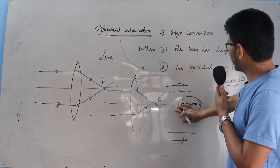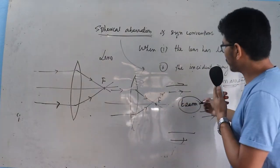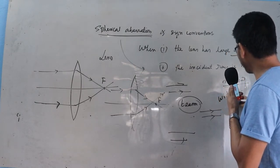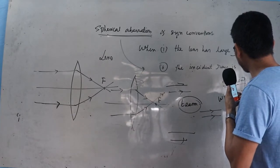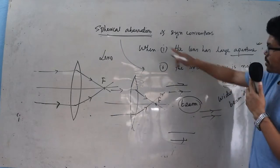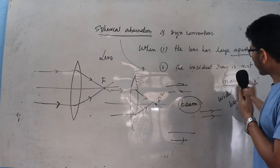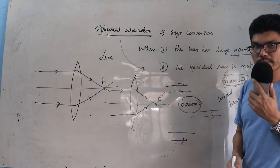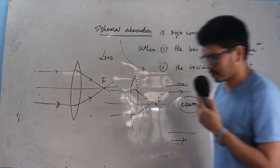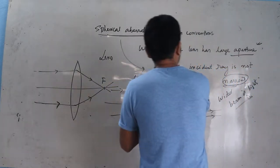The causes of spherical aberration are: number one, large aperture, and number two, a wider beam of light. If you use a wider beam of light it can produce spherical aberration; on the other hand, if you use a narrow beam of light the spherical aberration can be avoided. These are the two factors that cause spherical aberration.